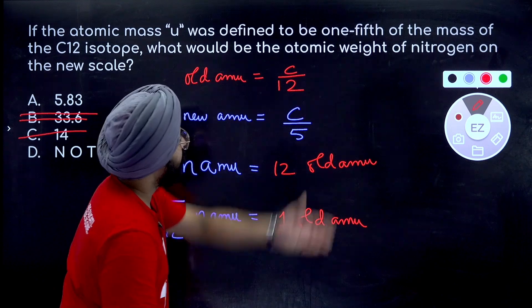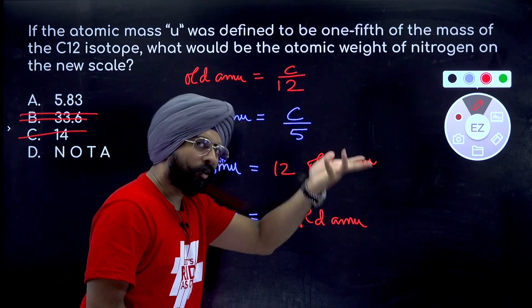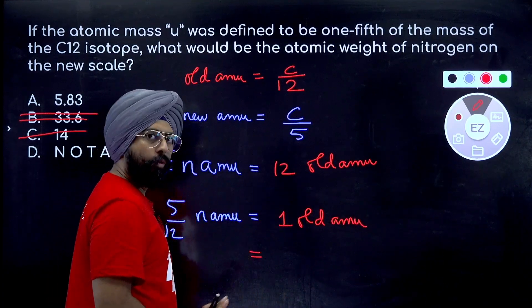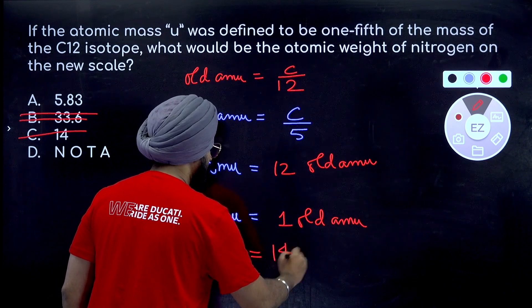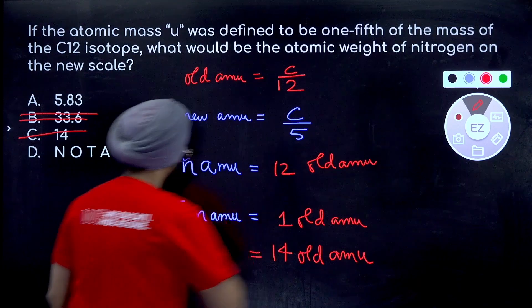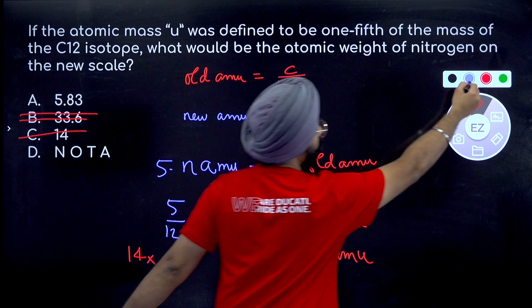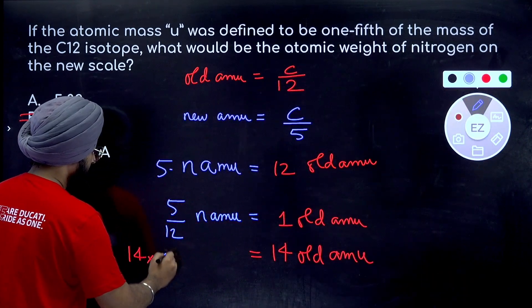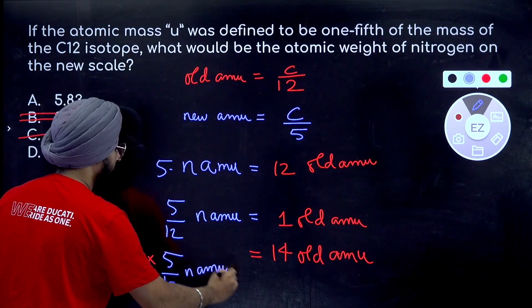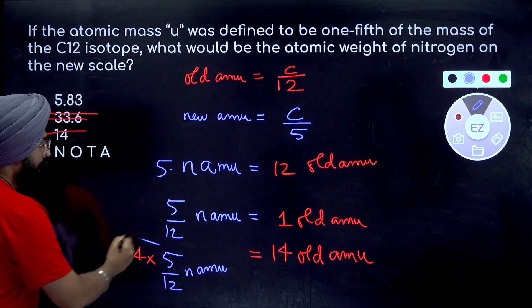Now my dear friends, what is nitrogen? Nitrogen is 14 old atomic mass units. Let's just put that on the right hand side, let's multiply both of these with 14 basically. So 14 old atomic mass units will be equal to 14 into 5 by 12 new atomic mass units. This is your answer.